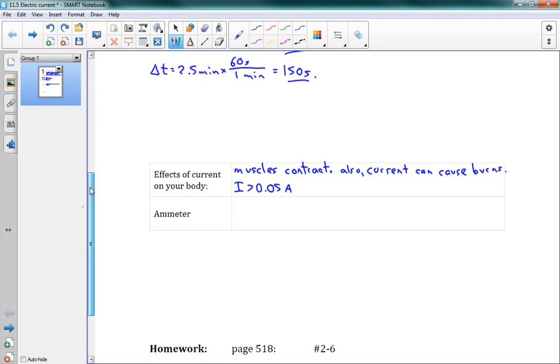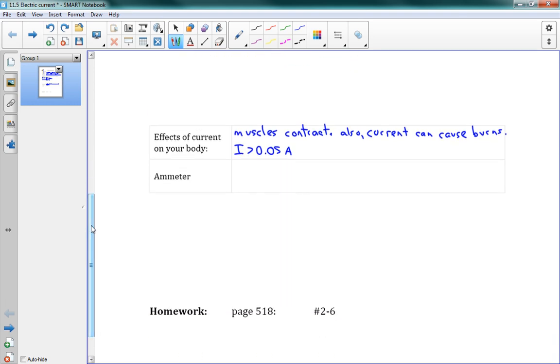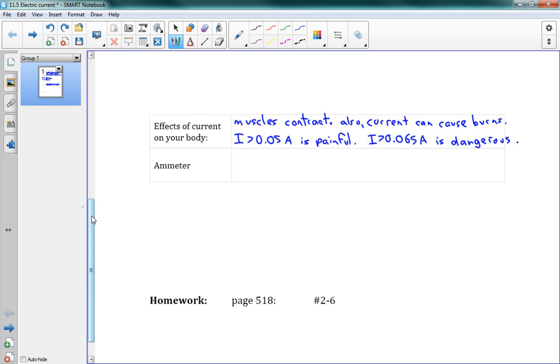So that's a pretty small number. If we look at the problem above, we had 0.005 amps. So that would have been safe for it to go through our body. So if the current is more than 0.05 amps, this is painful. And if the current is greater than 0.065, this is dangerous. So you do have to be careful. Whenever you see something that warns about a high current, you want to be sure you're not going to let that go through your body. You're not going to touch that thing with high current.